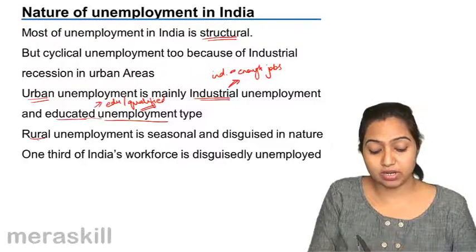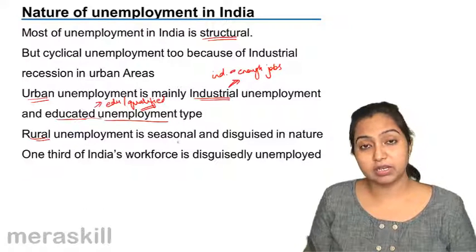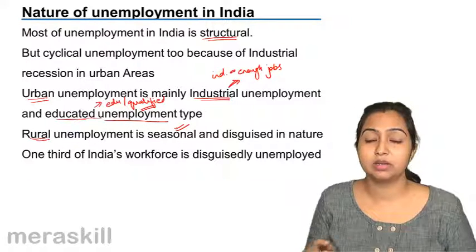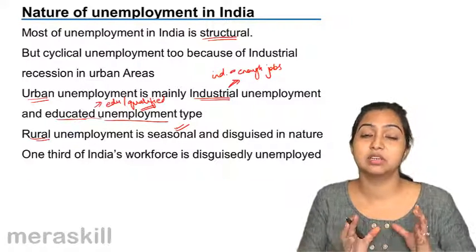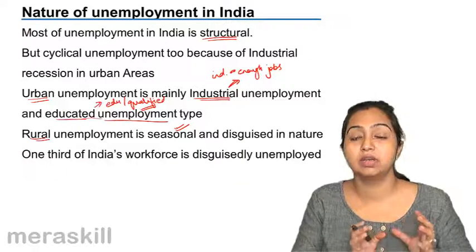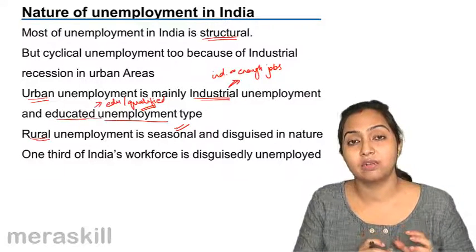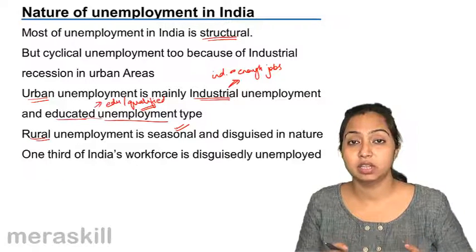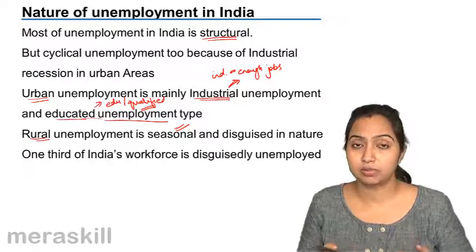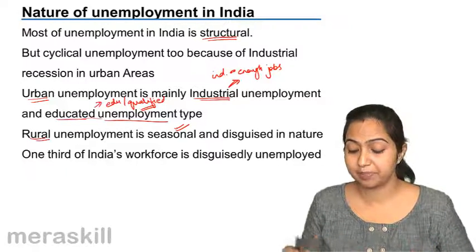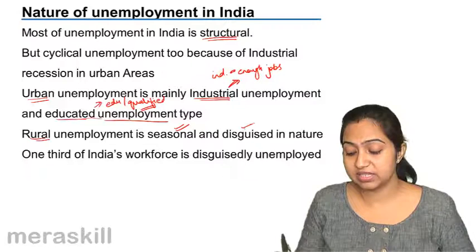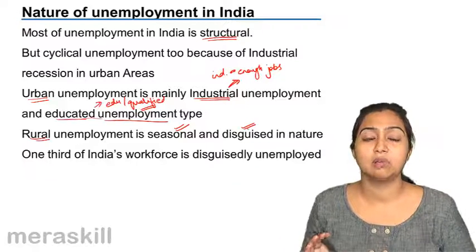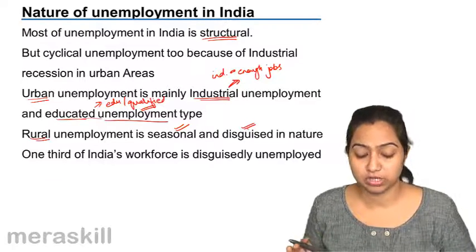In rural areas, the type of unemployment that exists is mostly seasonal — some part of the year people are involved in farming activities like harvesting, and the other part of the year they are not, making it a slow period for them. It is also disguised in nature, where many people appear to be working on the farm but are actually not contributing to production.